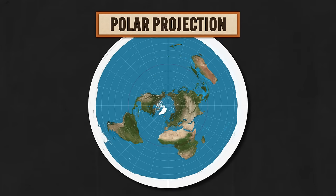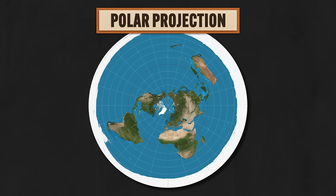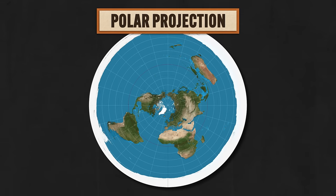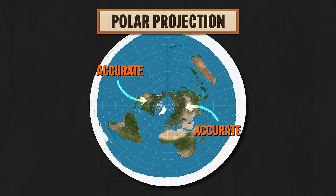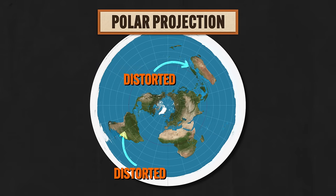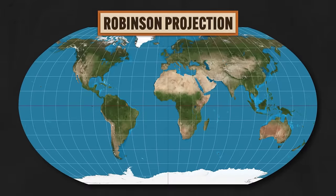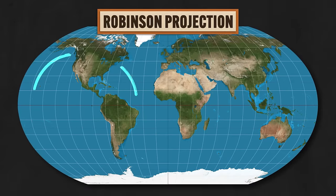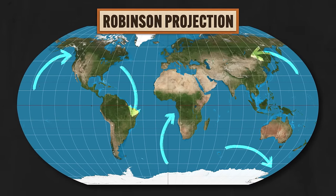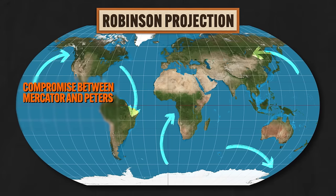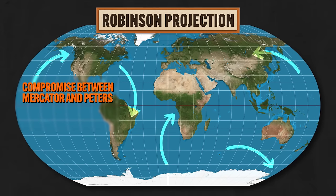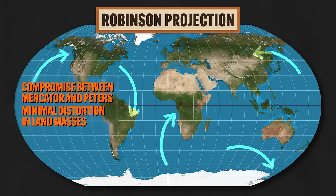The fourth map projection is the Polar projection, which views the world from the north or south pole. In this kind of projection, directions are true and the land shapes are accurate near the middle, but distortion is pretty obvious as you move from the center. Finally, the fifth map projection is the Robinson projection, which distributes all kinds of distortion to all parts of the map, and in this way is a kind of compromise between the Mercator and Peters projections. There is some distortion in the landmasses, but it's pretty minimal, and that's why modern geographers tend to prefer the Robinson projection.